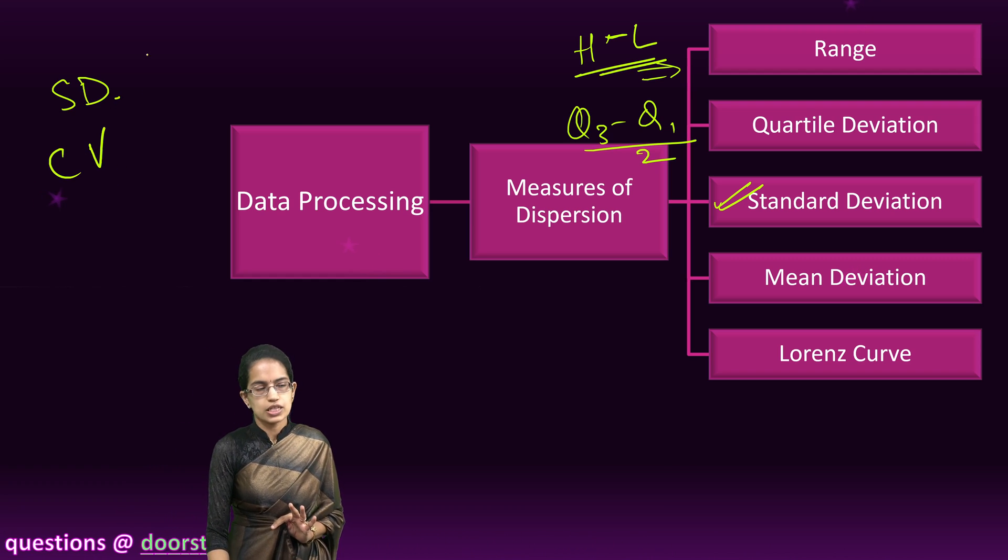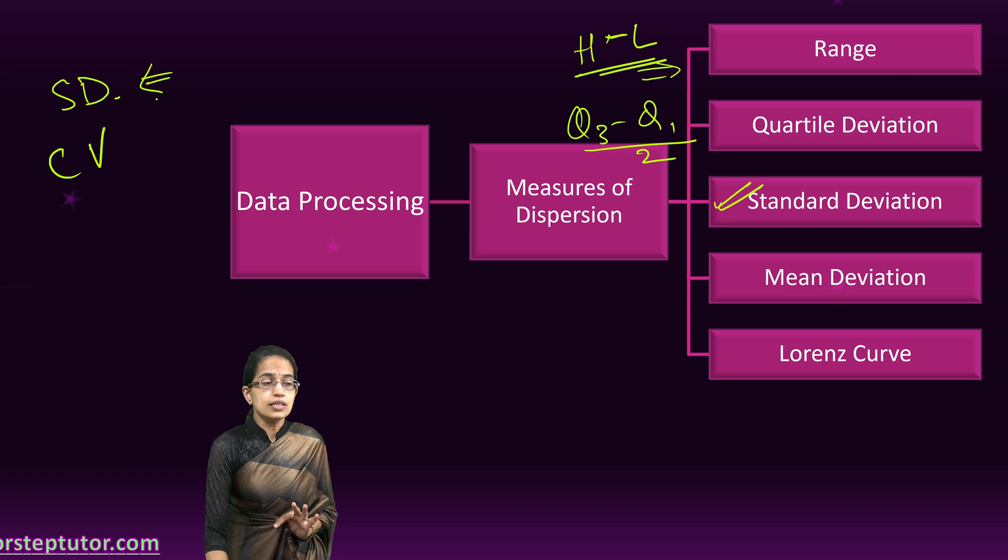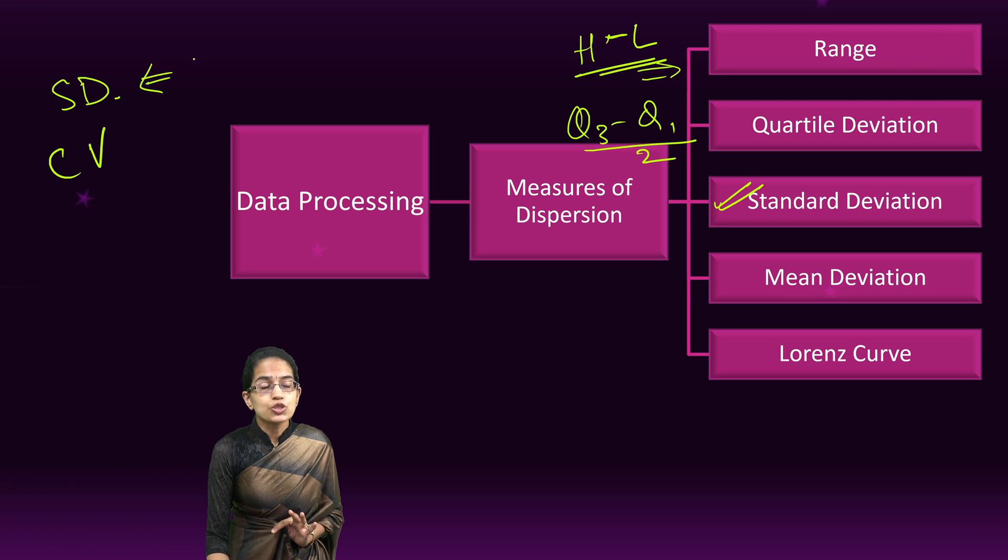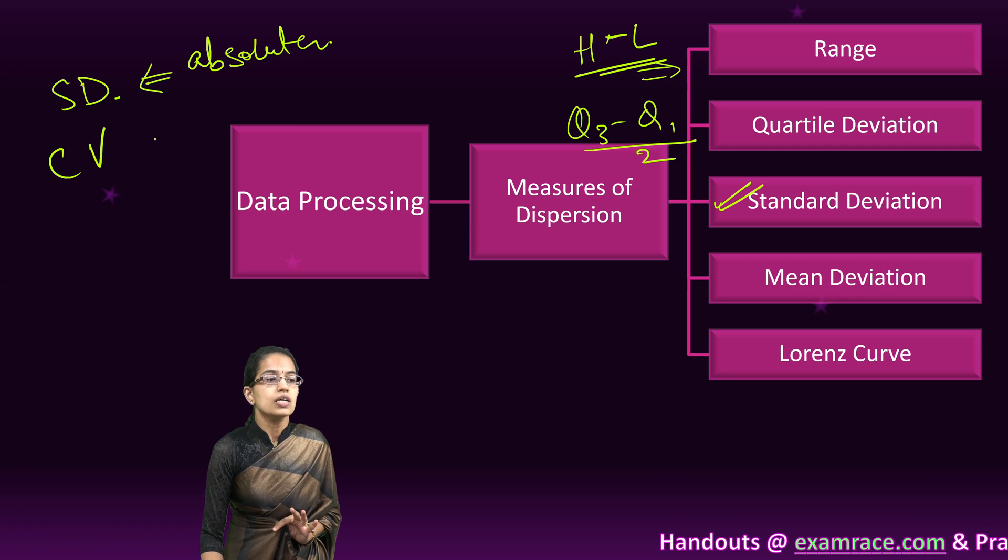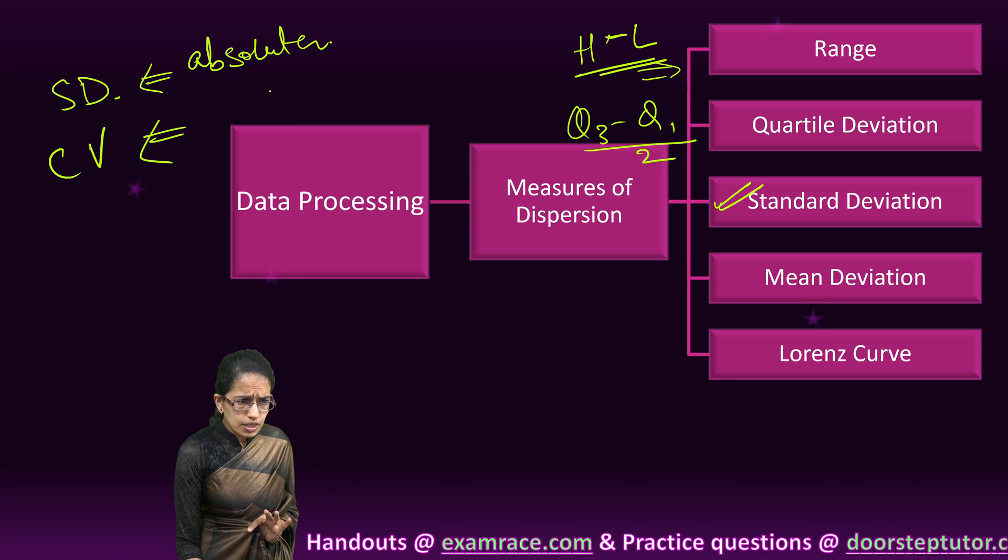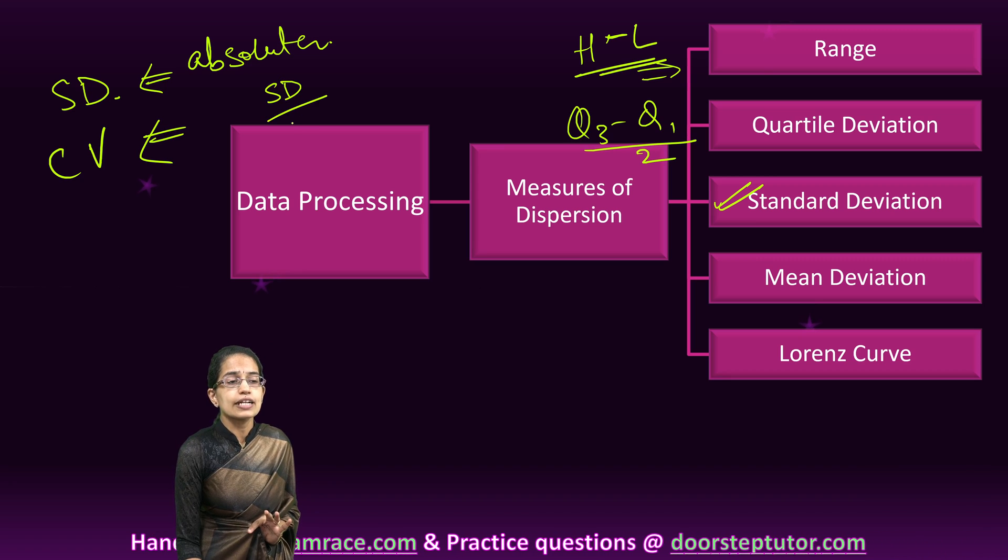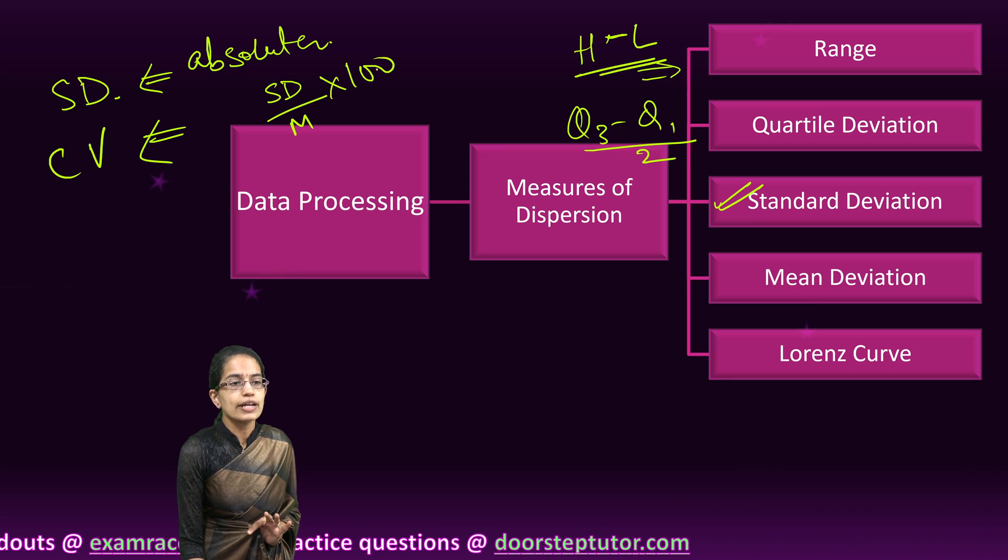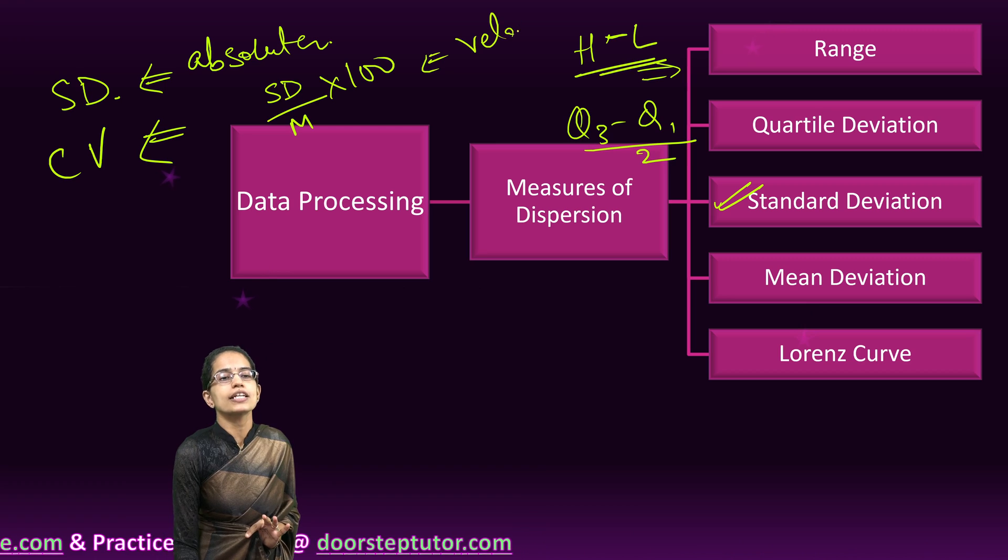A very important difference between standard deviation and coefficient of variation: standard deviation gives you the absolute measure of dispersion. However, coefficient of variation, which is simply explained as standard deviation divided by mean times 100, gives you a relative measure of dispersion.